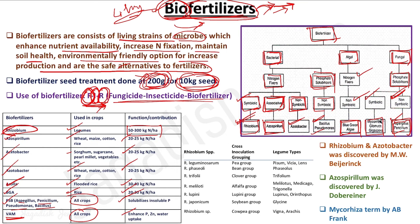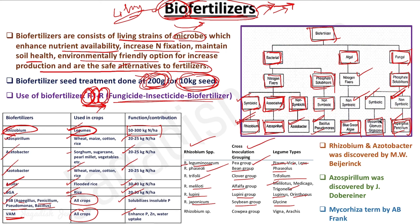There are different Rhizobium species and different cross-inoculation groups — different species infect the root nodules of different leguminous crops. Rhizobium leguminosarum is most suitable for the pea group: Pisum, Vicia, Lens. The bean group (Phaseolus) uses Rhizobium phaseoli. The clover group (Trifolium) uses Rhizobium trifolii. Rhizobium meliloti is the alfalfa group: Melilotus, Medicago, Trigonella. Rhizobium lupini covers the Lupinus group. Rhizobium japonicum covers the soybean group (Glycine max) and is also used in groundnut. Different Rhizobium species are used for Vigna and Arachis as well.